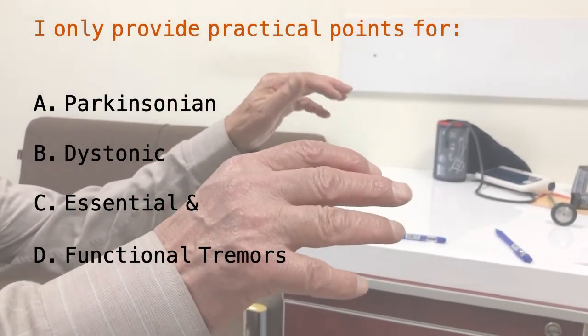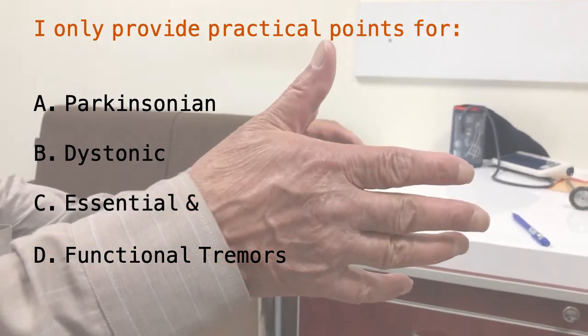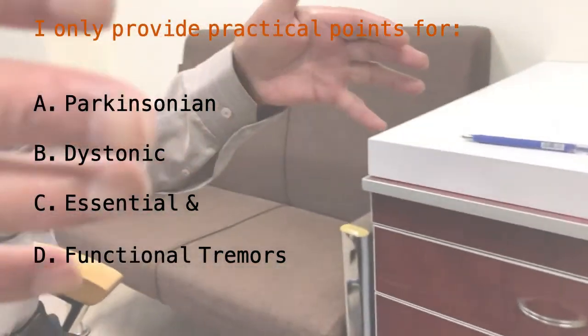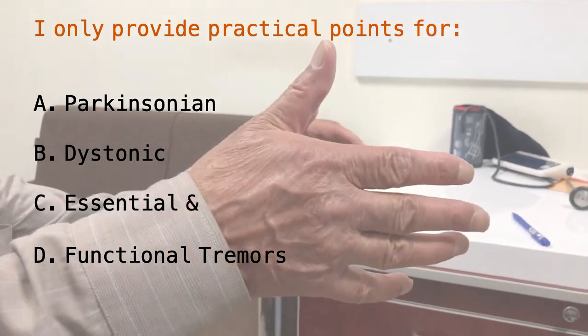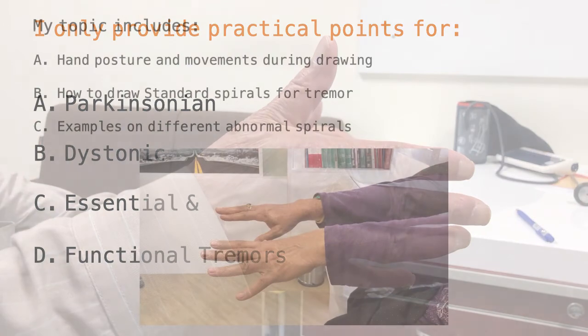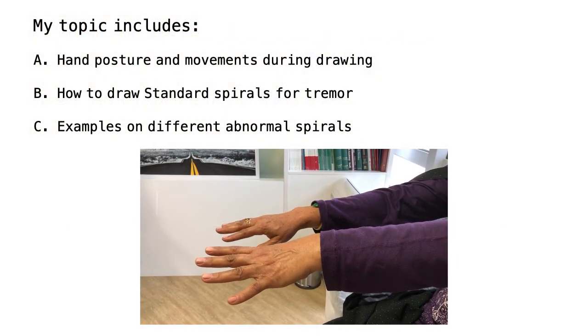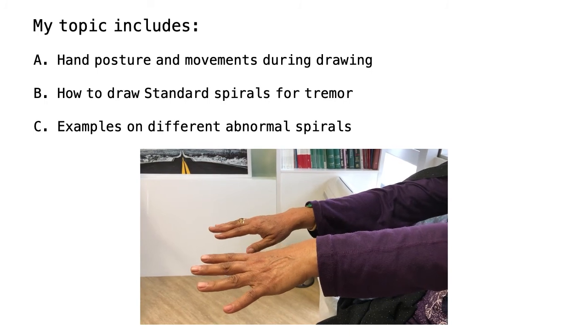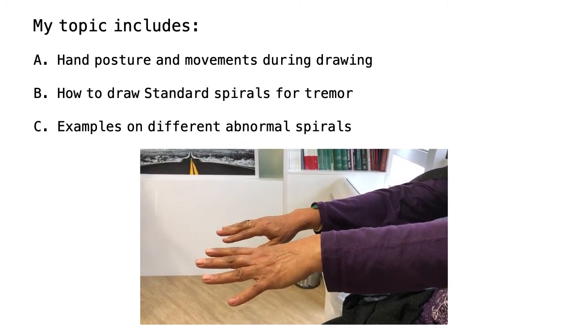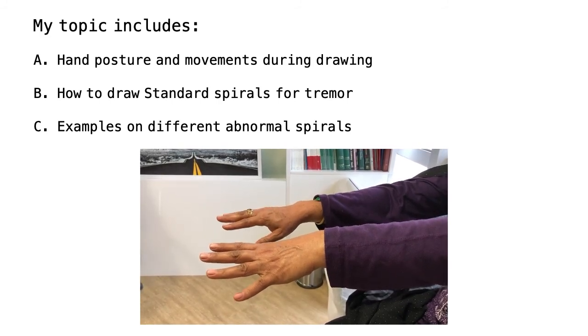I'll provide practical points for four types of tremor that I found very common in my office visits: Parkinsonian, dystonic, essential, and functional tremor. My topics include hand posture and movement during drawing, how to draw standard spirals for tremor, and examples from my patients on different abnormal spirals.